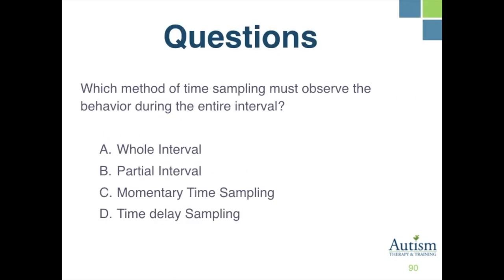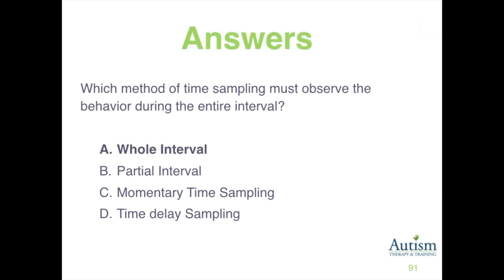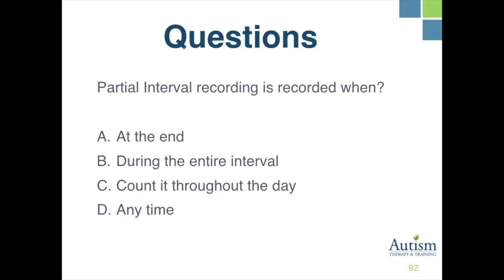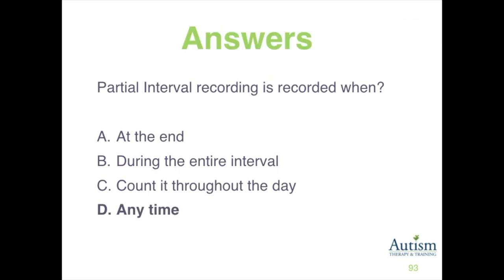Which method of time sampling must observe the behavior during the entire interval? A, whole interval; B, partial interval; C, momentary time sampling; or D, time-delay sampling? The correct response is A, whole interval. Partial interval recording is recorded when A, at the end; B, during the entire interval; C, counted throughout the day; or D, any time? The correct response is D, any time.